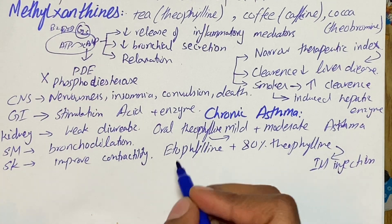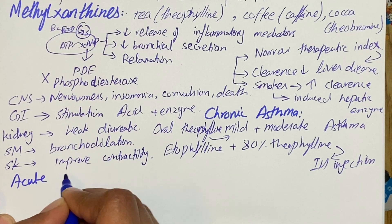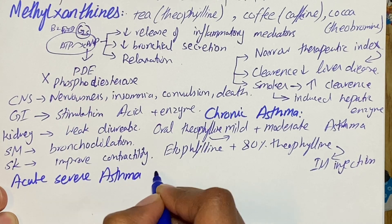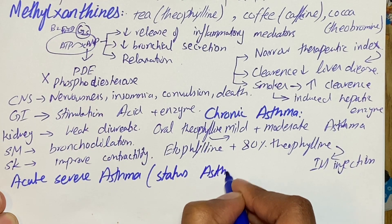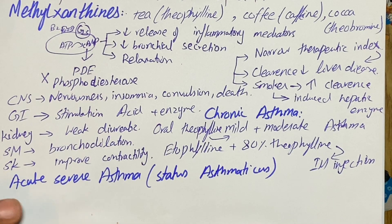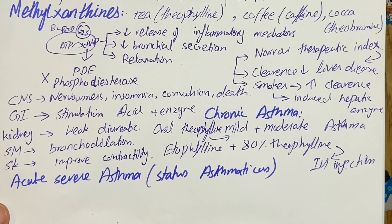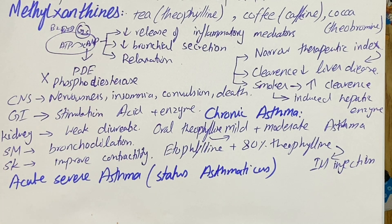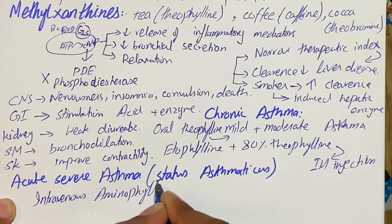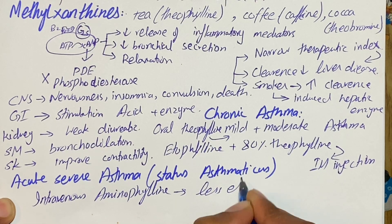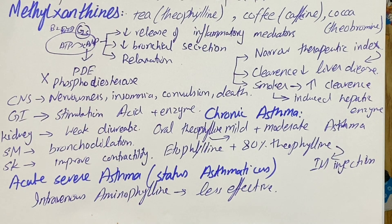In acute severe asthma — also called status asthmaticus, which is an emergency condition of the asthmatic patient — intravenous aminophylline is tried when sympathomimetics, another important type of bronchodilator, fail to relieve bronchospasm. However, remember that these agents are found to be less effective than sympathomimetic drugs.